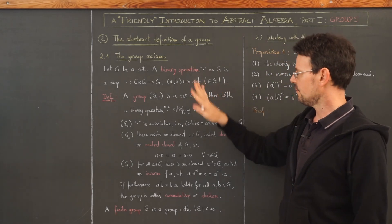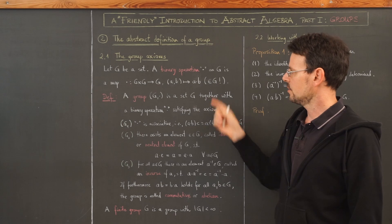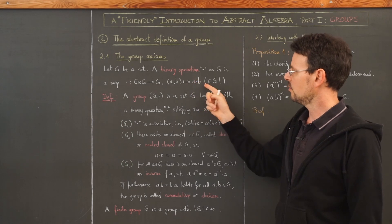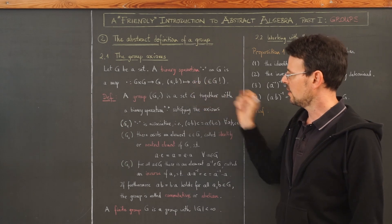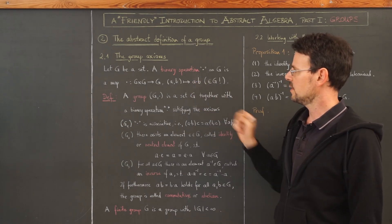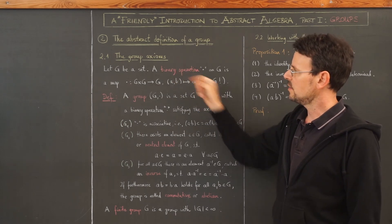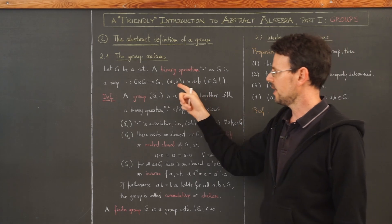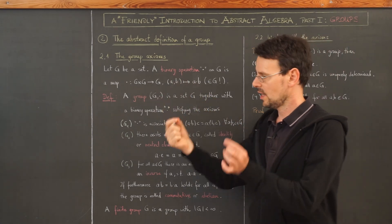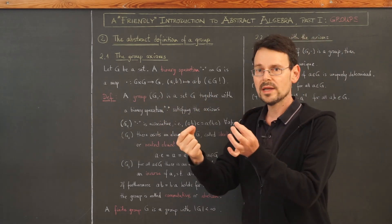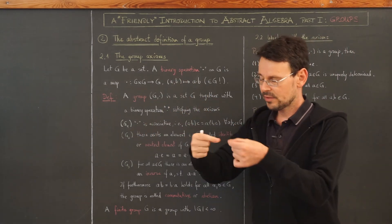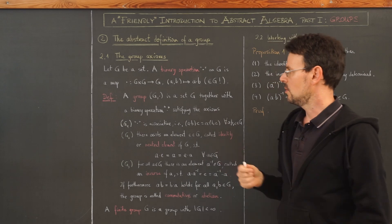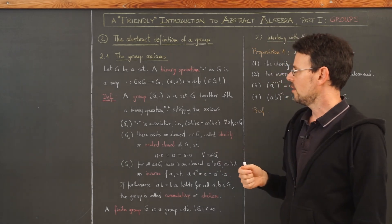So a·b is again an element of the set, and this is called a binary operation — 'binary' because we take two elements and combine them to a new element.